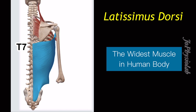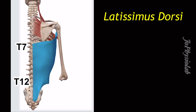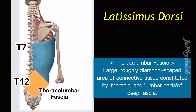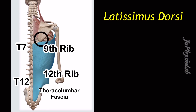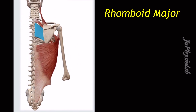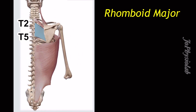The latissimus dorsi attachment starts from T7 to T12 spinous processes of the vertebrae, the thoracolumbar fascia, 9th to 12th ribs, and continues to the inferior angle of the scapula. The latissimus dorsi inserts at the intertubercular sulcus of the humerus. The rhomboid major muscle attachment begins with T2 spinous processes of the vertebrae.